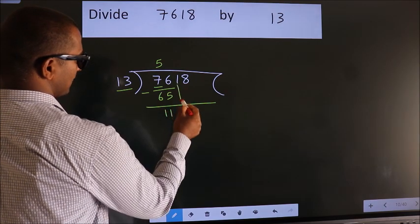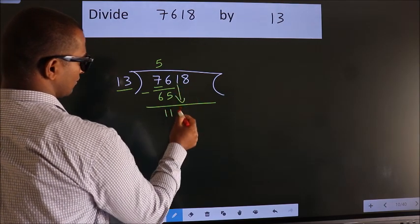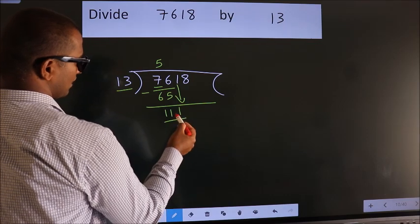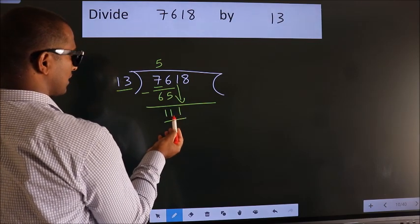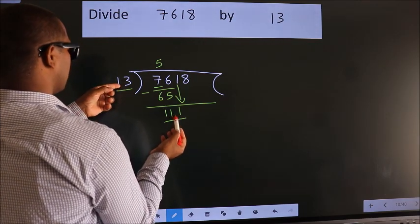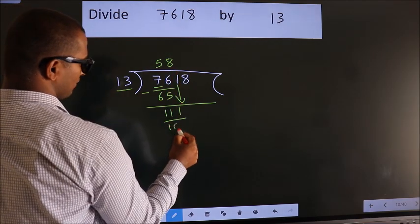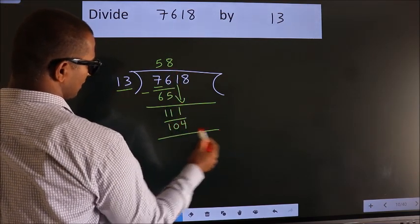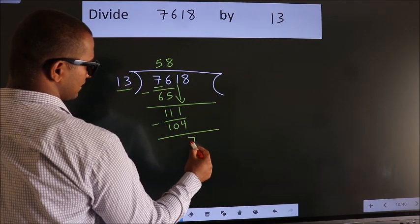After this, bring down the beside number. So 1 down. So 111. A number close to 111 in the 13 table is 13 times 8 equals 104. Now we subtract. We get 7.